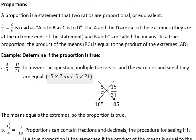A proportion is a statement that two ratios are proportional or equivalent. We just had a video about ratios which are comparing two things. So A is to B as C is to D is how you would read this. The A and the D are called the extremes, and they're at the extreme ends of the statement when you read that to help you remember that. And B and C are called the means.